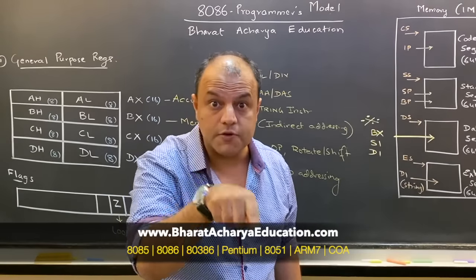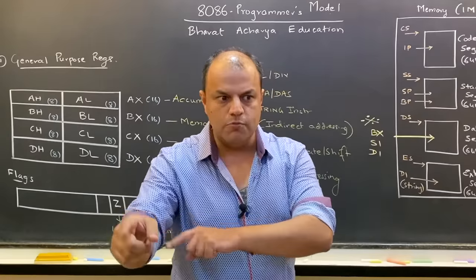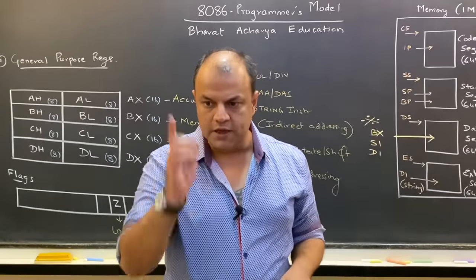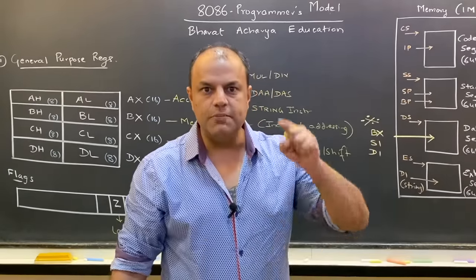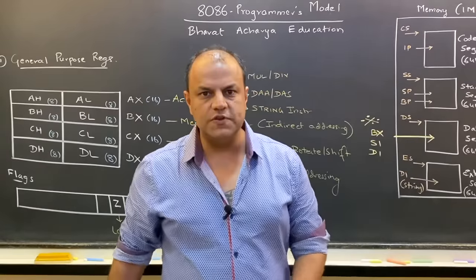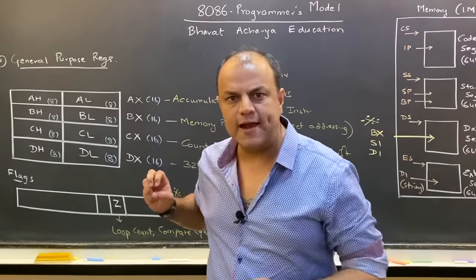I'm going to pinpoint and tell you: if you want to do multiply divide, keep this register free. If your program requires loops, keep this register free. If you want to access a series of locations, use this register. I'm going to tell you the exact use of every particular register which you're going to be doing in programs.